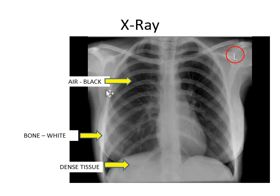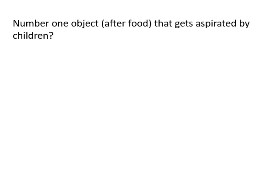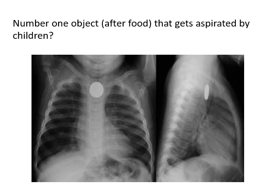What is the number one object — after food — that gets aspirated by children? Aspirated means they suck it into their trachea or bronchi — it goes into their lungs. Did anybody think of coins? Here's an x-ray showing how depth is lost. Here's a child who swallowed a coin. On the front view it looks like it's just stuck right in the very front, but when you do a side x-ray you can see it has actually gone down their trachea into their chest. This demonstrates the importance of having a couple of images to get depth — and make sure your kids aren't walking around with money in their mouths.